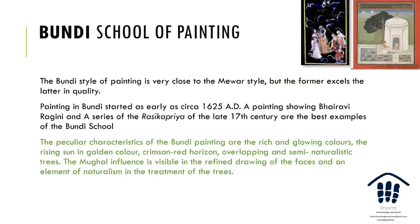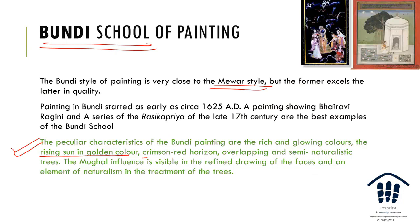The Bundi school is very close to the Mewar style but excels in quality. The 1625 Bhairavi Ragini and the Rasikapriya are famous examples. Peculiar colors are rich and glowing, with rising sun and golden color in a crimson-red horizon shown overlapping semi-naturalistic trees. Mughal influence is seen in the drawing of faces, with an element of naturalism — there is less exaggeration here compared to other schools.